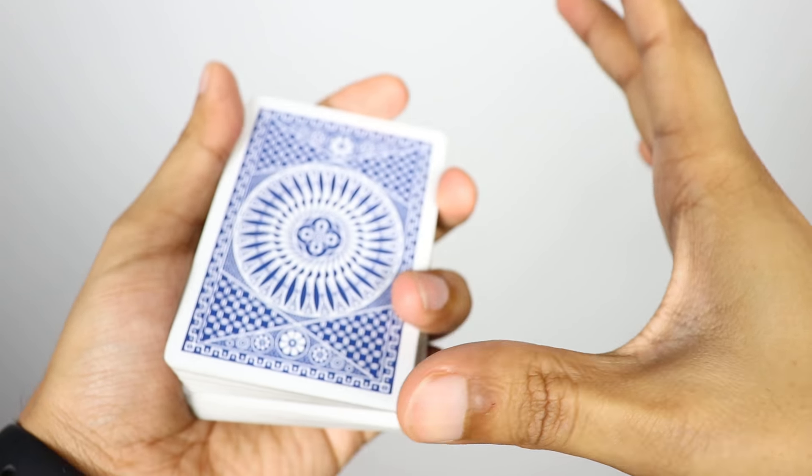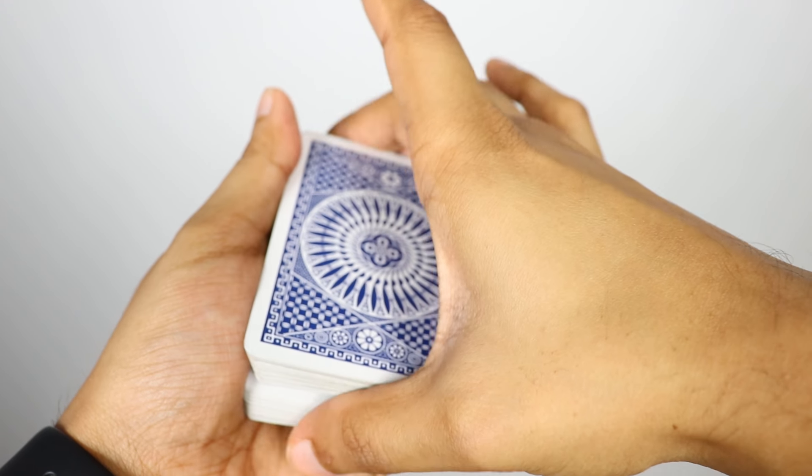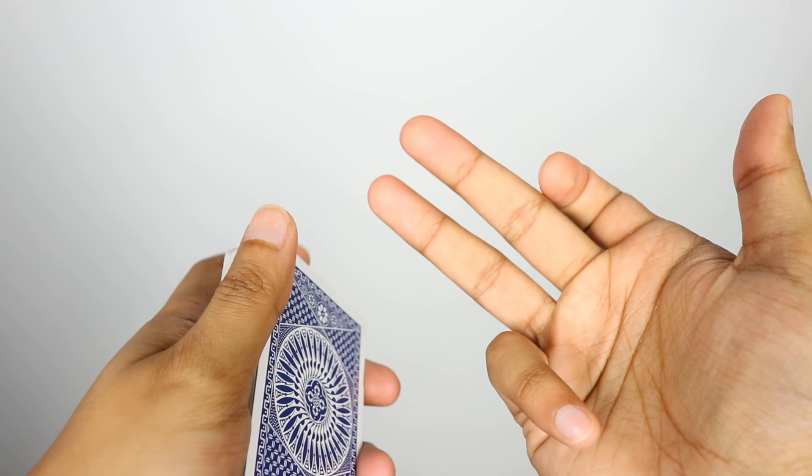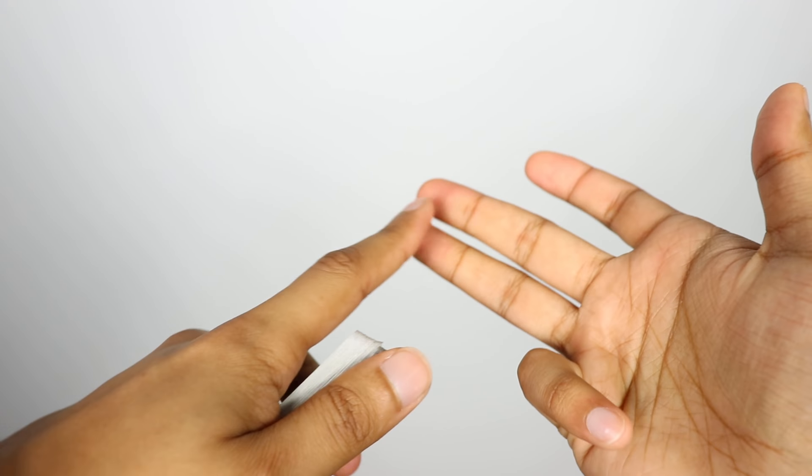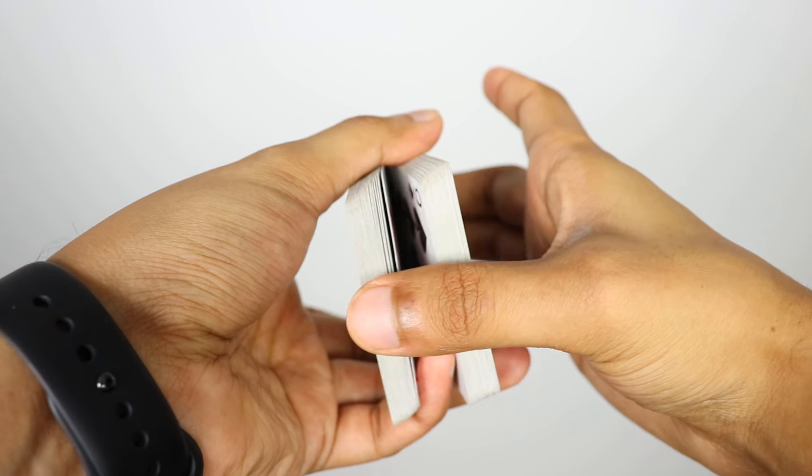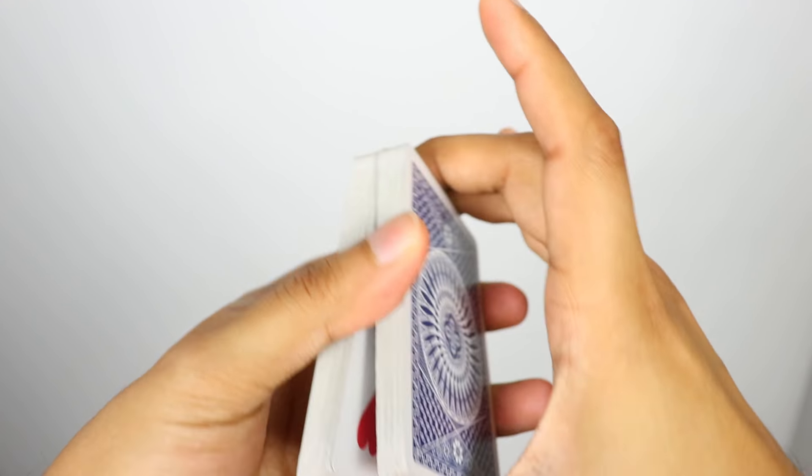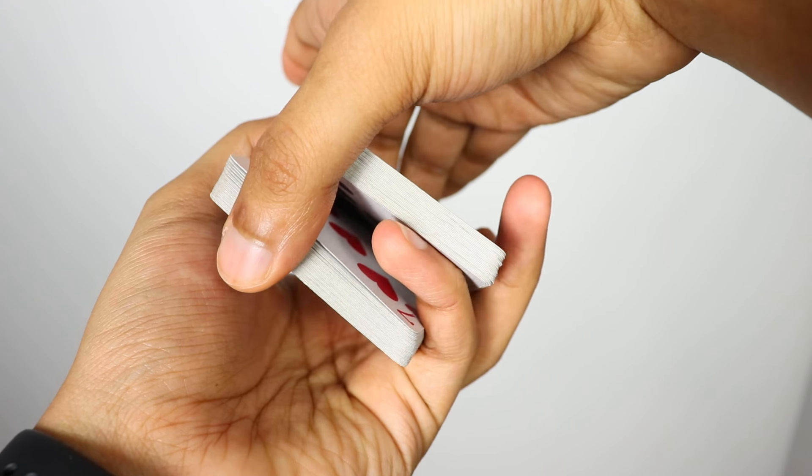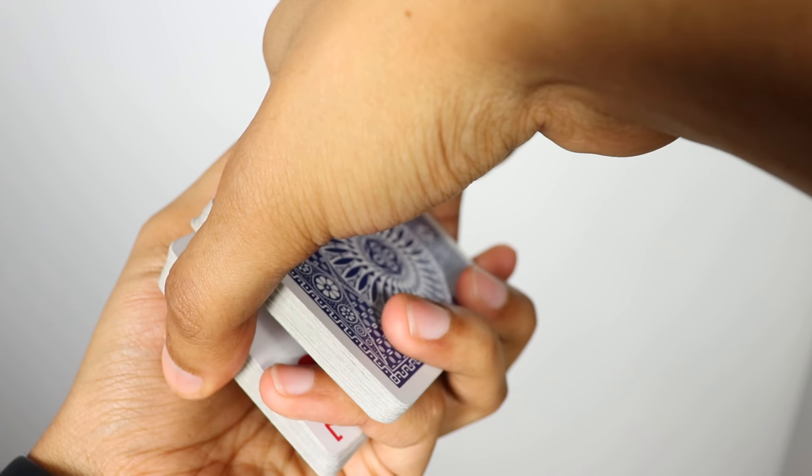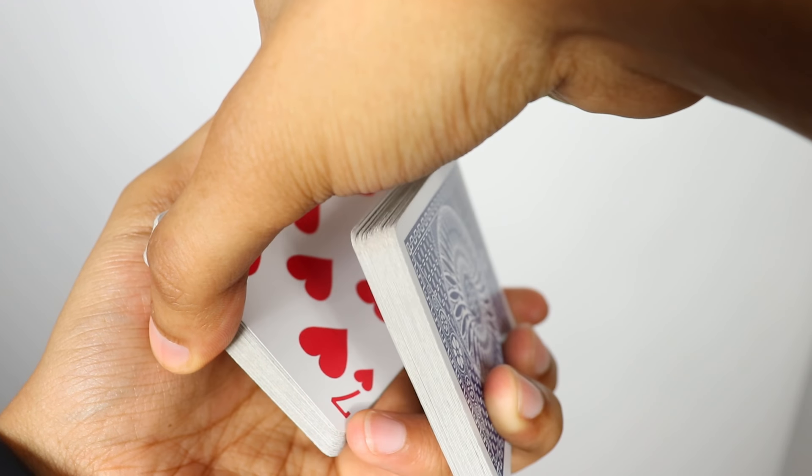And this corner right here is going to be between your middle finger and your pointer finger. So in slow motion, what's going to happen is we're going to grab these cards right here like this. We're going to grab the bottom packet using our ring and middle finger of our right hand, thumb of our right hand. We're going to grab the bottom packet, like this and like this.